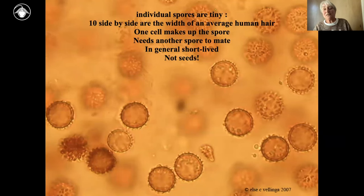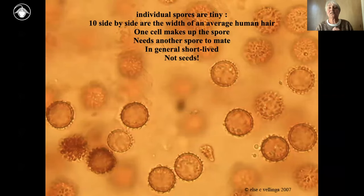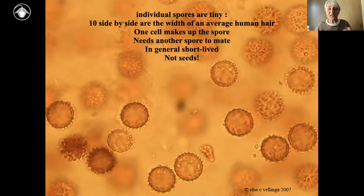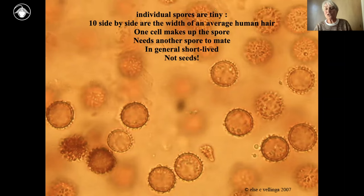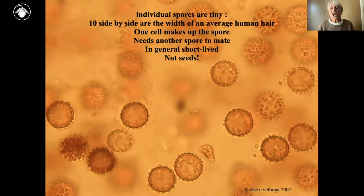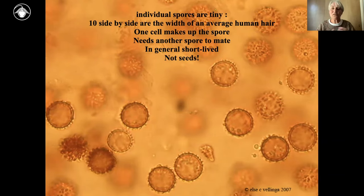You can see the spores when they're in mass, but they're microscopically tiny — you have to put at least 10 side by side to get the width of an average human hair. In most cases it's only one cell, so there's not much to it. It needs another spore to mate in many cases. In general, they are not long-lived — they can't survive very long before they germinate. They have the same kind of function as seeds, but they're definitely not seeds. Seeds are bigger, have much more resources, and the whole plant is already ready to go. This is only one cell.